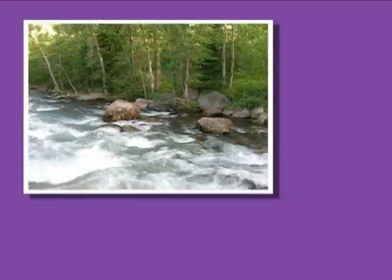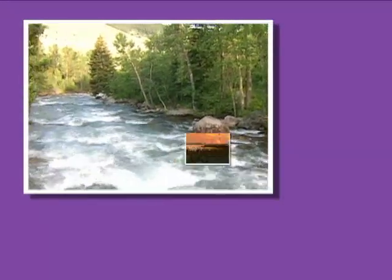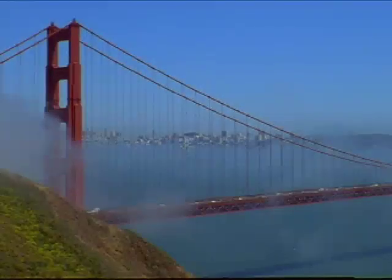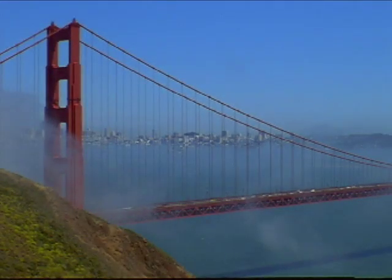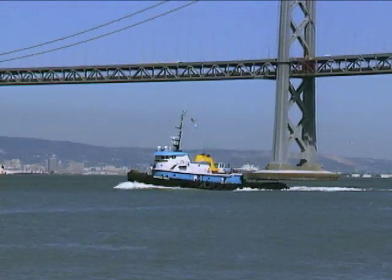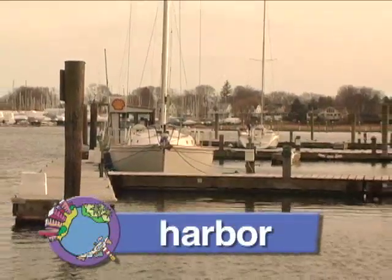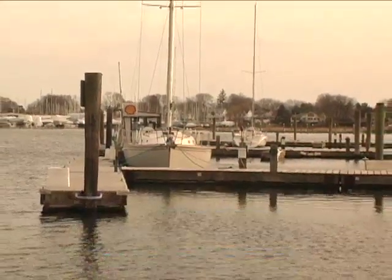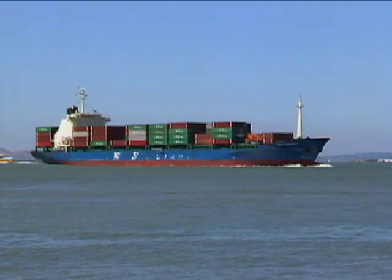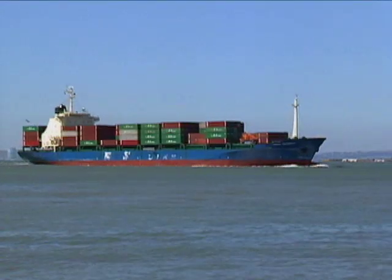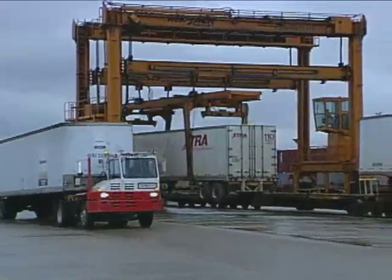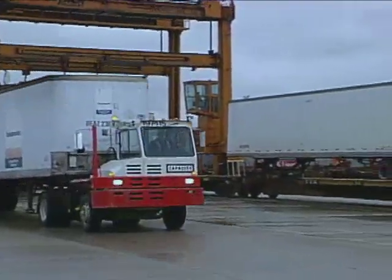River communities aren't the only places that depend on water. There are also ocean communities. Many communities are by an ocean. Some ocean communities have harbors where boats and ships can dock. A harbor is a body of water that protects against the wind and waves of the ocean. Large ships from all over the world sail into these harbors carrying goods. Once they're unloaded, the goods can be placed in large trailers or containers and shipped across the country.